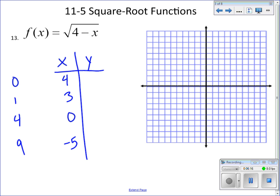Now we can plug those values in and get our y value. So 4 minus 4 is 0, the square root of 0 is 0. 4 minus 3 is 1, the square root of 1 is 1. 4 minus 0 is 4, the square root of 4 is 2. And then 4 minus negative 5 is 9, and the square root of 9 is 3.